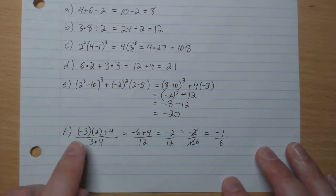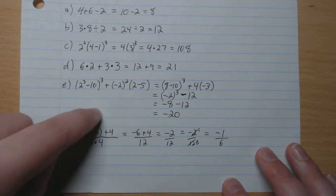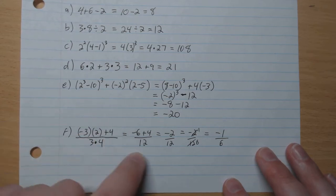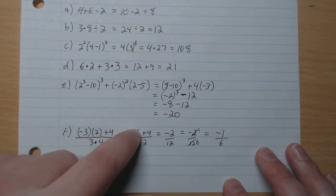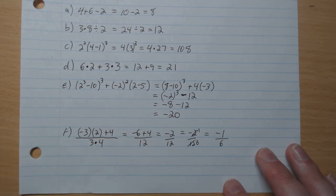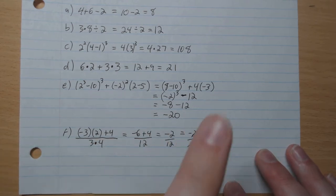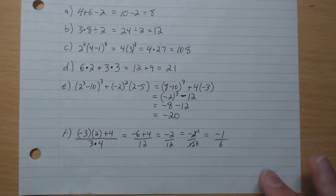F. Negative 3 times 2 is negative 6. So all of this here divided by 12. So this top gives negative 2 over 12. There's a 2 in common. So negative 1 over 6 is our final answer.